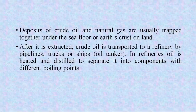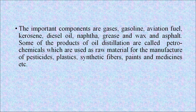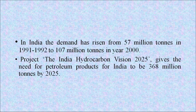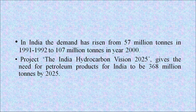Deposits of crude oil and natural gas are usually trapped together under the seafloor or earth's crust on land. After extraction, crude oil is transported to a refinery by pipelines, trucks or ships. In refineries, oil is heated and distilled to separate it into components with different boiling points. The important components are gas, gasoline, aviation fuel, kerosene, diesel, oil, naphtha, grease, wax and asphalt. Some products of oil distillation are called petrochemicals, used as raw materials for manufacture of pesticides, plastics, synthetic fibers, paint and medicines. In India, demand rose from 57 million tons in 1991–92 to 107 million tons in 2000.